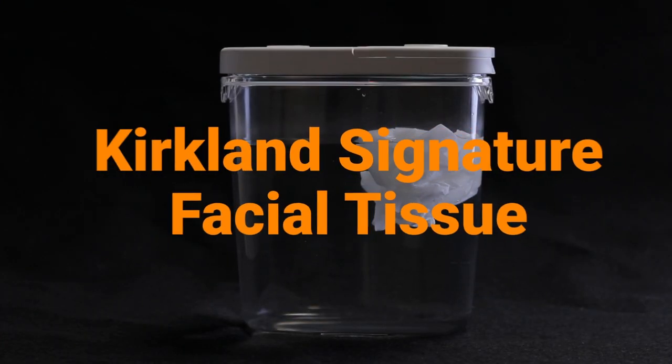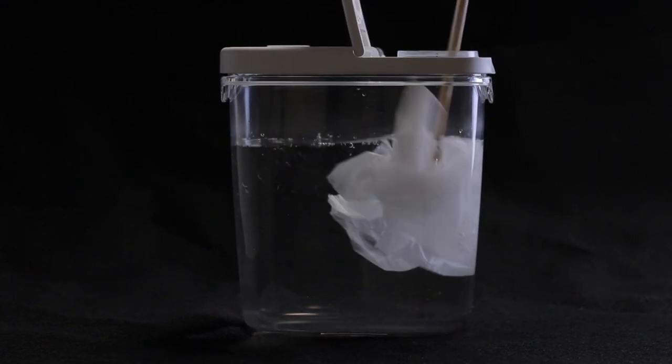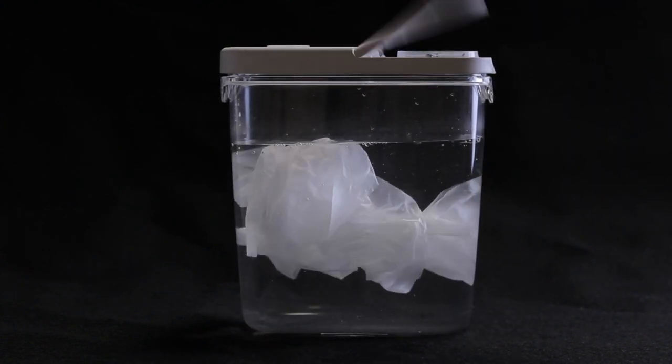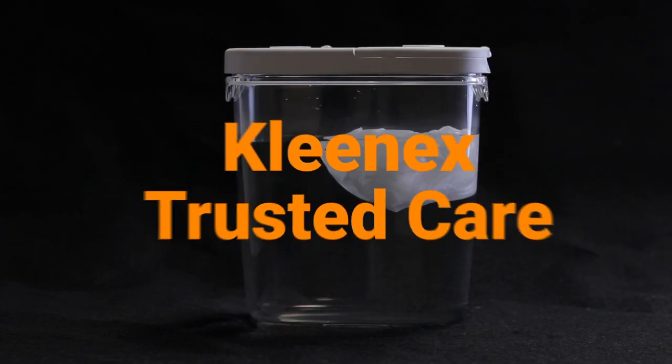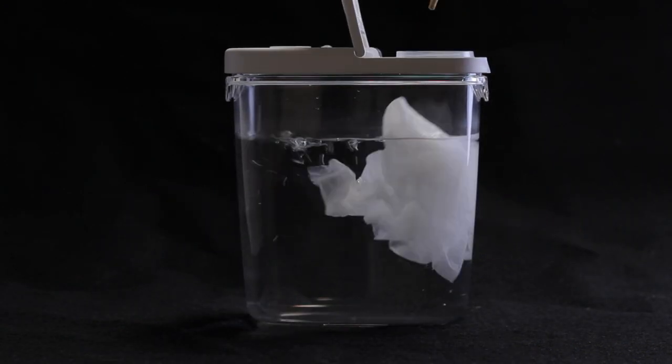Sometimes facial tissue ends up being a plan B when you run out of toilet paper. Kirkland did have the softness down but it failed to break apart. Kleenex Trusted Care was the same story except it cost more.